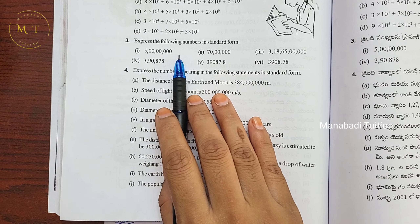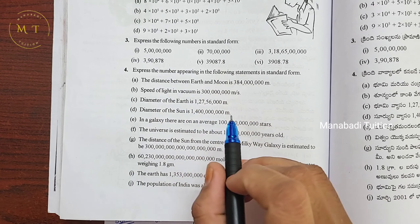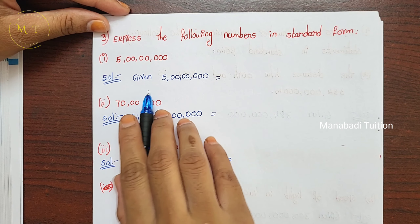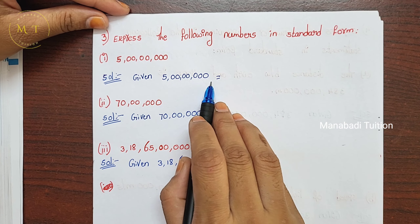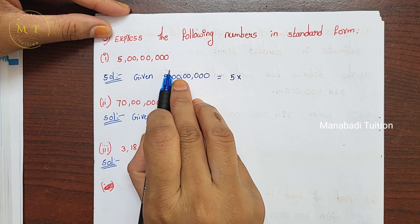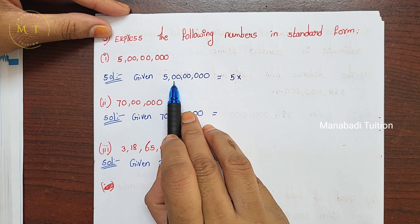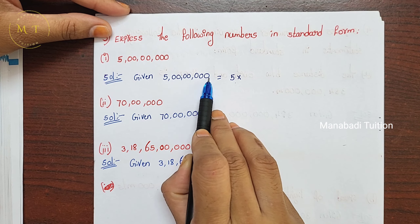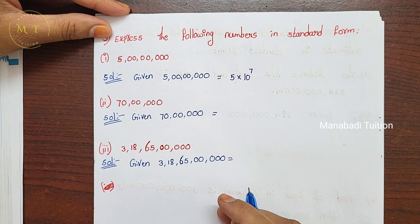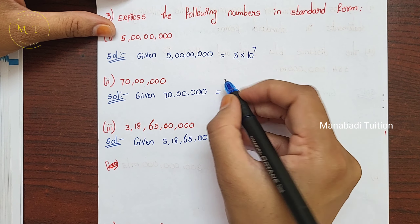So first, I have 10 power 3 and 10 power 7. We will check the first number. The first number is 5 crores. So the number is 5 into the normal number — this is the normal number.